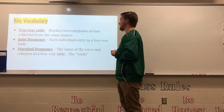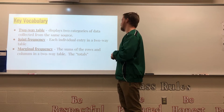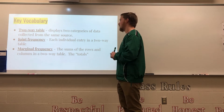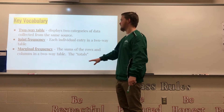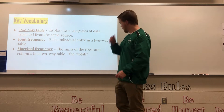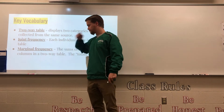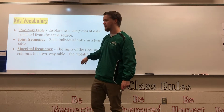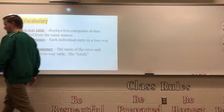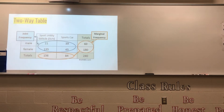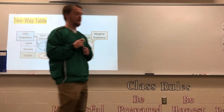Joint frequency is each individual entry in a two-way table. Marginal frequency is the sum of the rows and columns — they are the totals. So marginal frequency is basically when you add up your joint frequencies and come up with different totals in the two-way table.